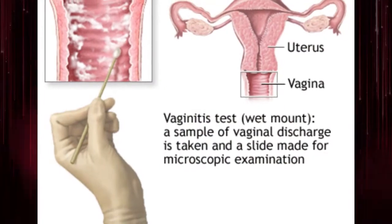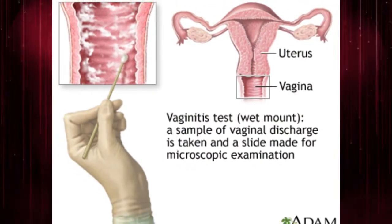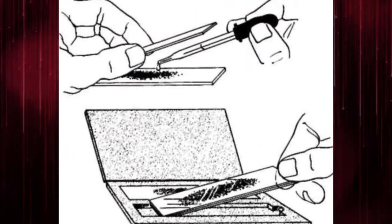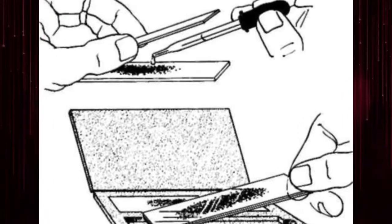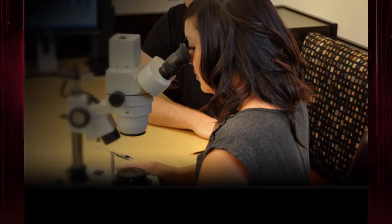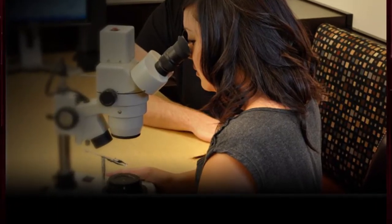An appropriate amount of vaginal discharge is transferred on the glass slide and a droplet of normal saline is added directly. The preparation is covered with a cover slip and examined under the light microscope at low power and high power magnifications.